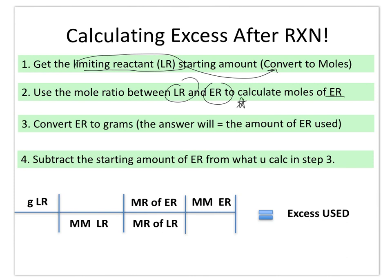At this point in this step, you have calculated the moles of excess reactant that have been used. It's very important to point out that at this point in the calculation, you have calculated how much excess reactant has been used. You're then going to convert the amount of excess reactant into grams using the molar mass. This is the quantity in grams of excess reactant that has been used based off of the amount of limiting reactant that you started with.